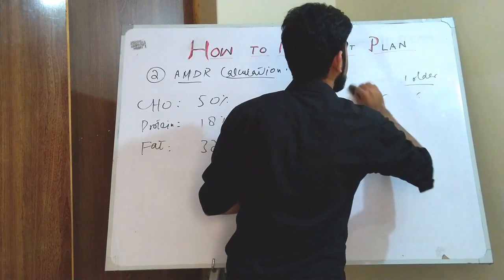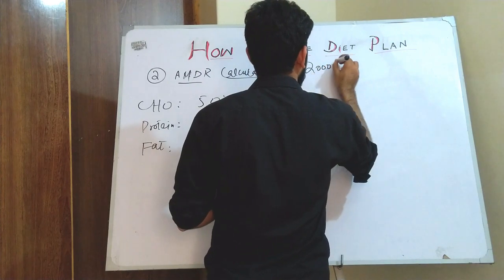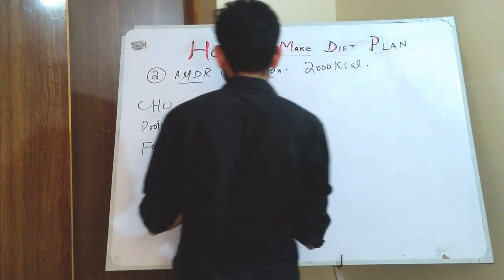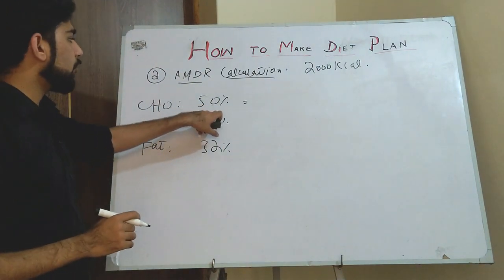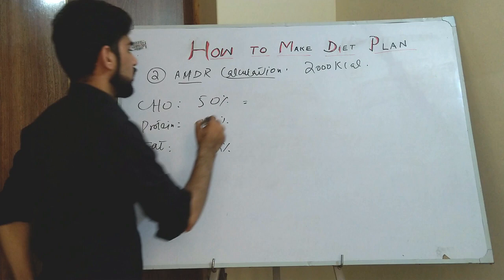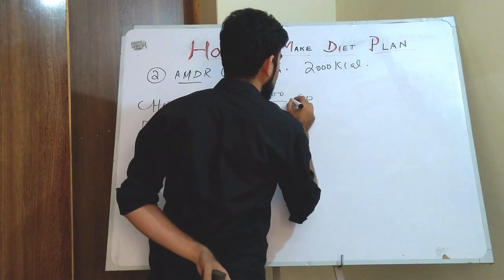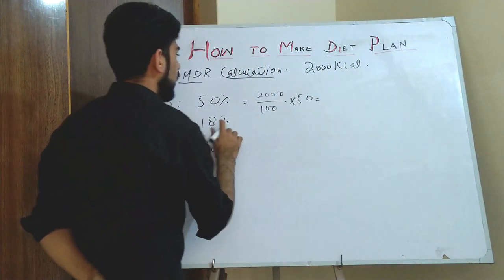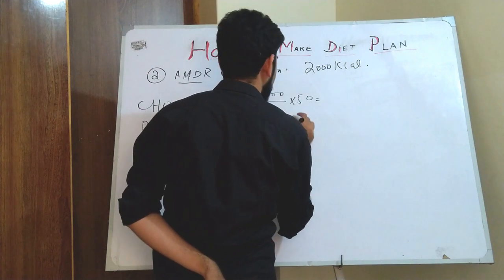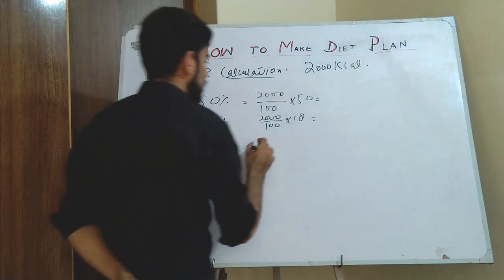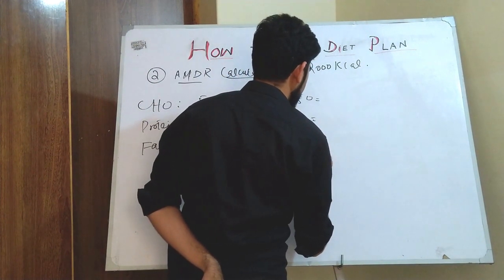Suppose the calories calculated in the previous step come to 2000 calories. We calculate the percentage of carbohydrate: 2000 divided by 100 multiplied by 50. Similarly, for protein: 2000 divided by 100 multiplied by 18. And for fat: 2000 divided by 100 multiplied by 32.